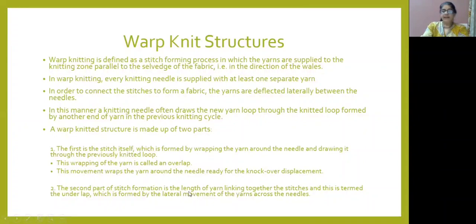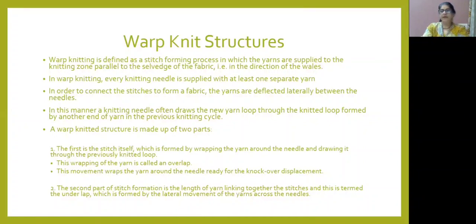The second part is stitch formation. When the stitch length is interlocked, a new stitch is provided during the interlocking, a new loop is formed, the previous loop is released, and this process is known as the underlap. Through this process, the fabric structure is created.